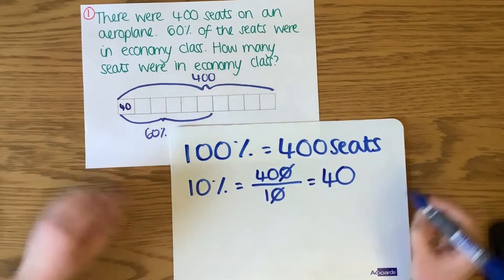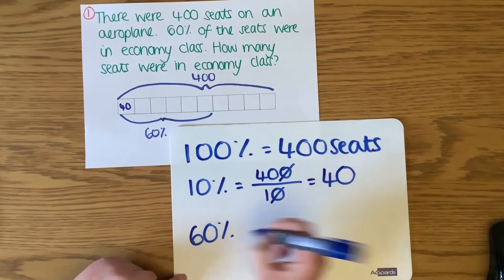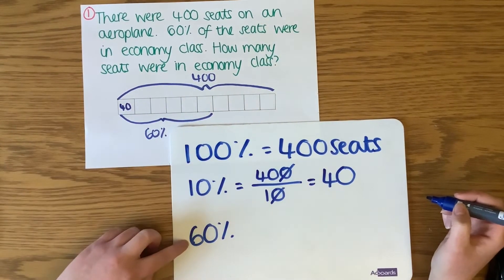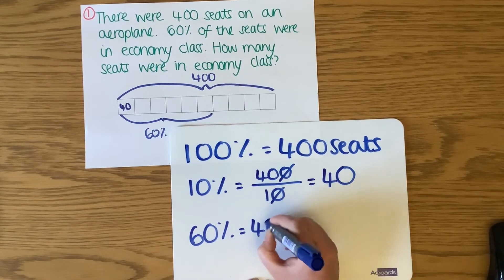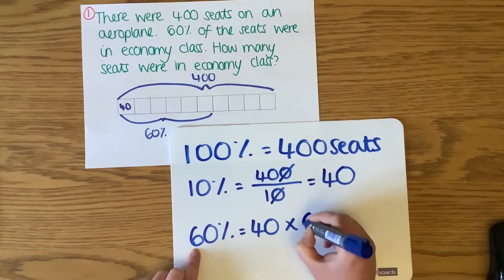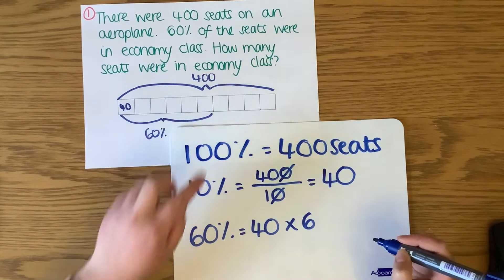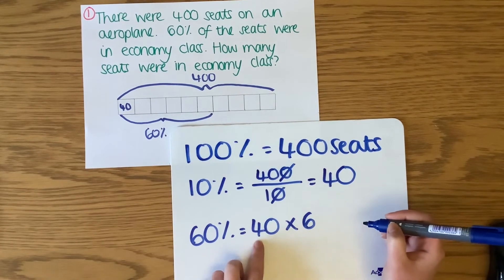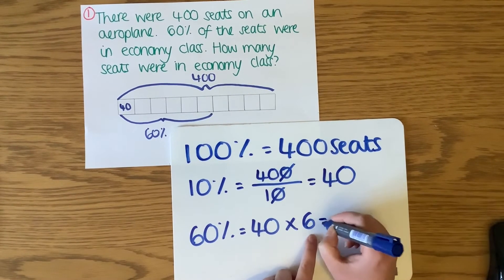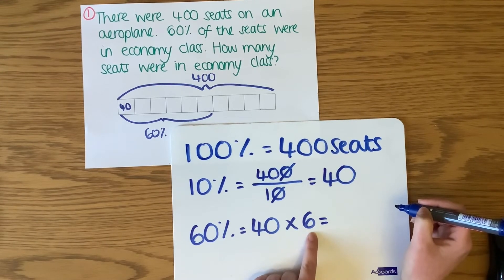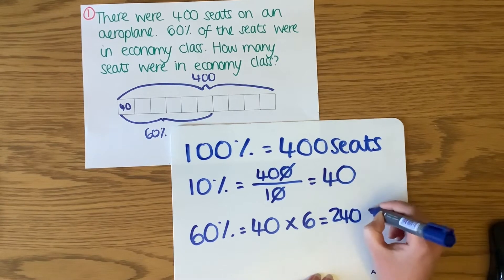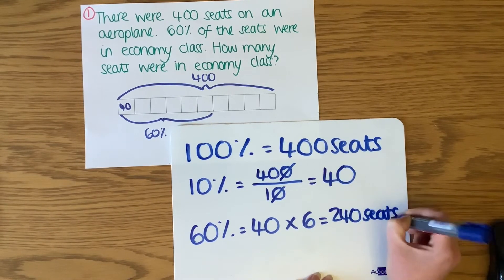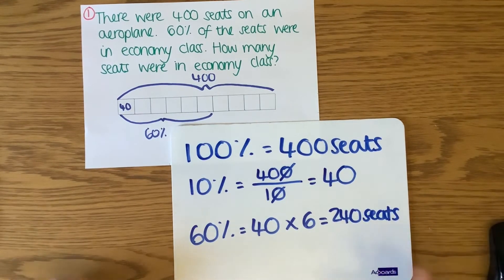Now I want to work out what 60% is. The way I can do that is: my 10%, which is 40, multiplied by 6 — because six lots of 10 makes 60. So I need to do 40 multiplied by 6. I know that 4 times 6 is 24, so 40 times 6 is 240. Going back to my question: how many seats were in economy class? 240 seats were in economy class.